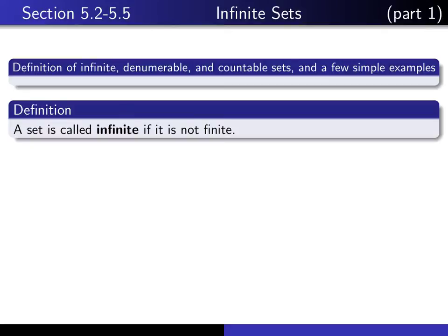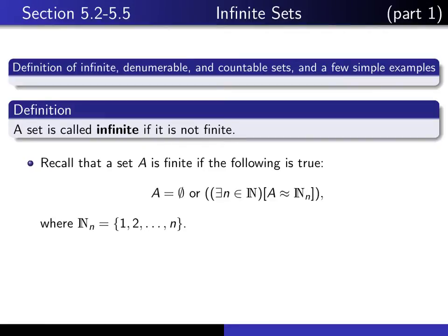We say that a set is infinite if it is not finite. You'll remember that the term finite is a technical term. It means that either the set is empty, or there exists a natural number n such that A and the set ℕₙ, which is given by {1, 2, ..., n}, have the same cardinality. In other words, there's a bijection from one of these sets to the other set.